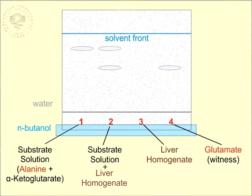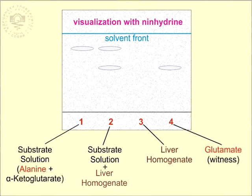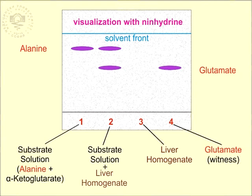Hydrophobic amino acids, such as alanine, dissolve better in the organic butanol and move upwards with it. Hydrophilic amino acids, such as glutamate, lag behind. After some time, the mixture splits into separate amino acids. After drying the paper, the samples are sprayed with ninhydrin and heated to visualize and identify the amino acids. Transamination is reversible. In this case, it is seen as a result of the transamination that the amino acid glutamate has been formed in equilibrium with alanine.